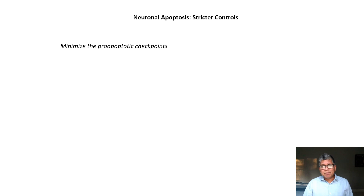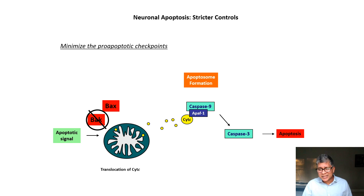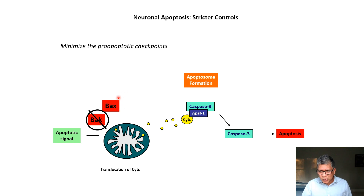The other thing neurons do is minimize their pro-apoptotic checkpoints. Remember that BAX and BAK can both act redundantly. In neurons, BAK is not expressed — when cells become post-mitotic neurons, they shut off BAK expression and become completely dependent on BAX only. If you delete BAX, post-mitotic neurons are unable to undergo apoptosis. This is a clever way to reduce redundancy and focus everything on BAX, allowing much better control over it.